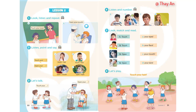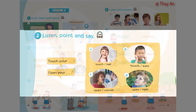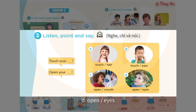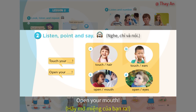Page 30, Lesson 2, Activity 2. Listen and point. A: Touch — hair. B: Touch — ears. C: Open — mouth. D: Open — eyes. Touch your hair. Open your mouth.